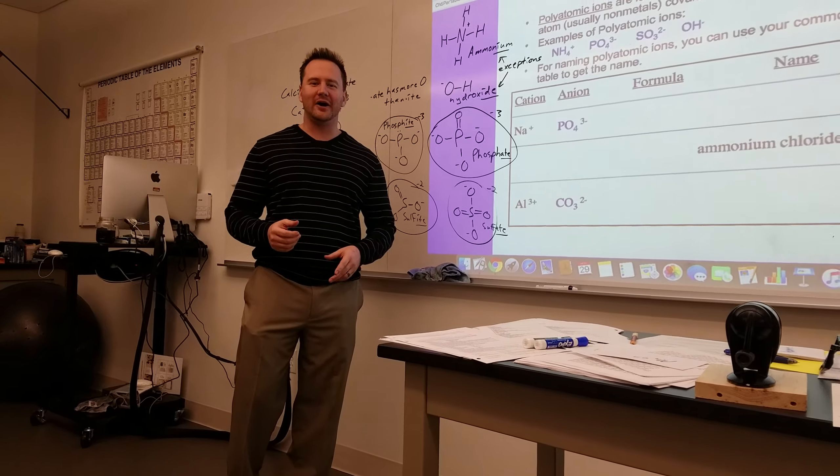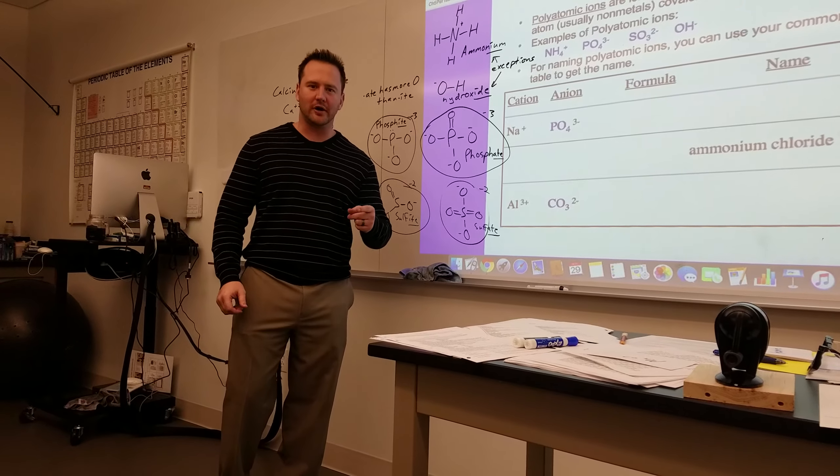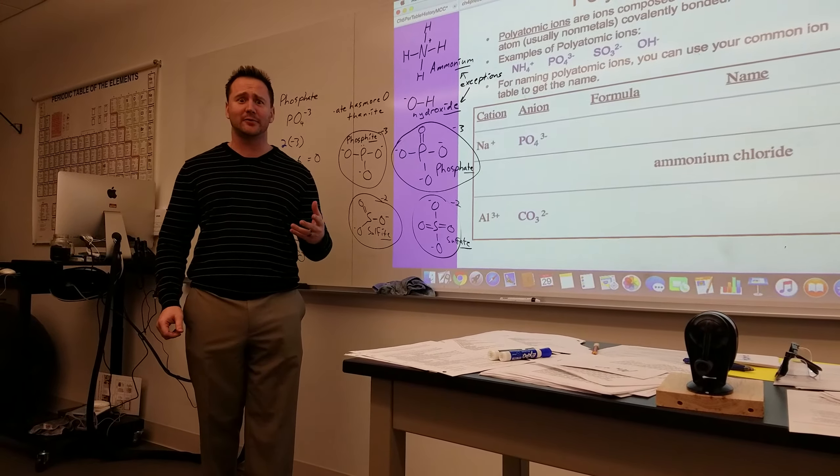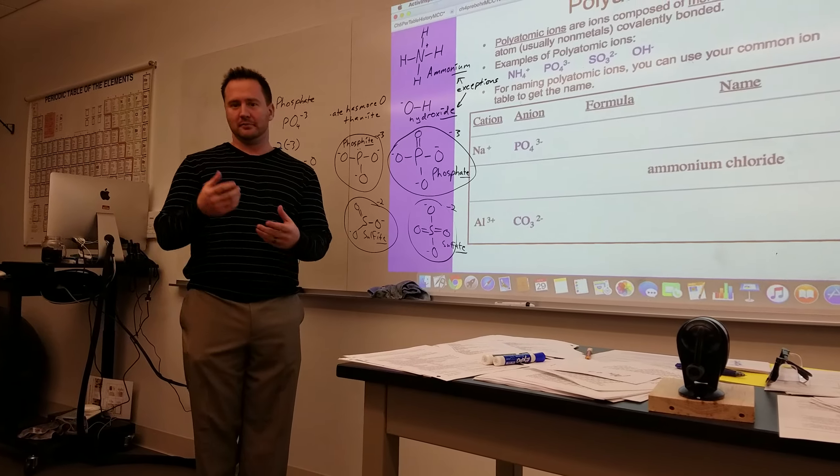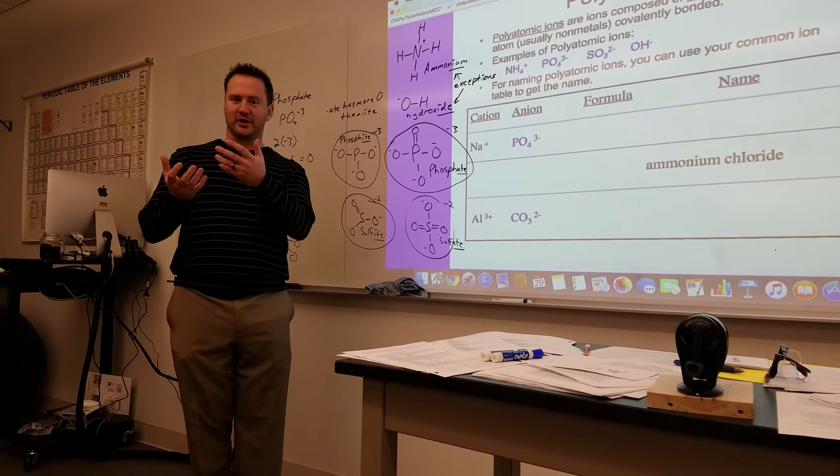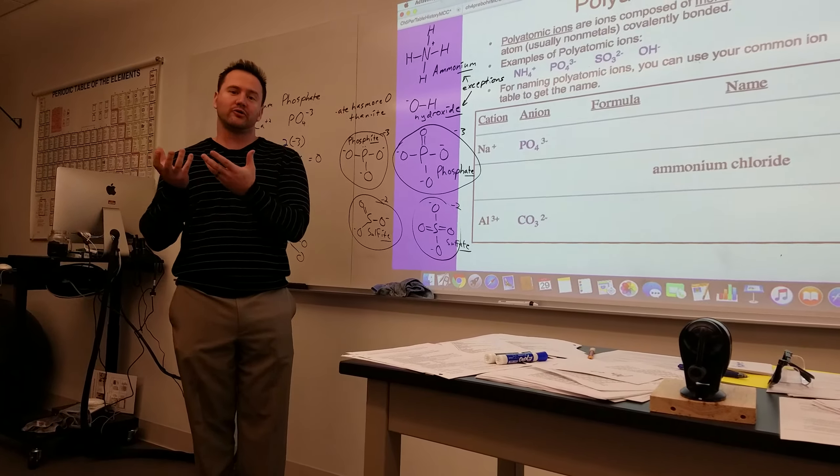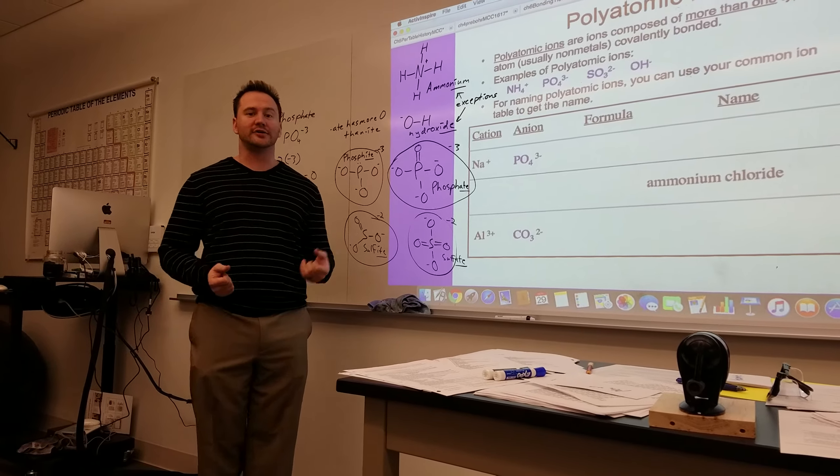In this video, we're going to learn about how to write ionic formulas and names for ionic compounds containing polyatomic ions. A polyatomic ion is exactly what it sounds like. It's poly, which means more than one, atomic meaning referring to atom, and ion meaning something with a charge. So you have a group of atoms that has a charge.